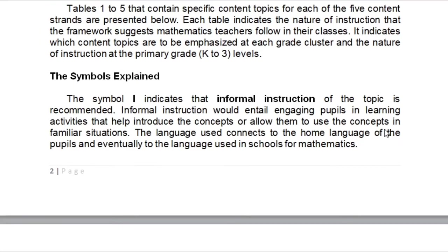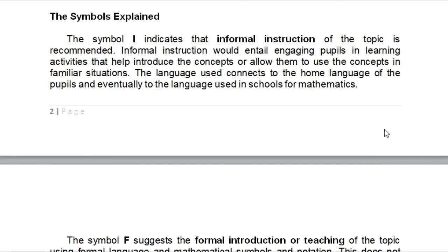There is a specific content or topic to discuss from Kinder to Grade 3 levels. First, let us know the symbols. The symbol 'I' indicates that informal instruction of the topic is recommended. Informal instruction entails engaging pupils in learning activities that help introduce the concepts or allow them to use concepts in familiar situations — introducing the idea and relating it to familiar situations.